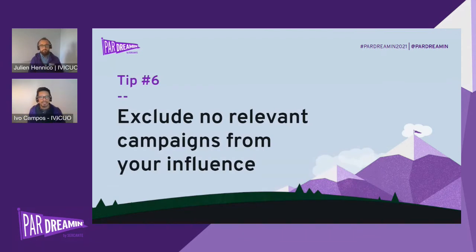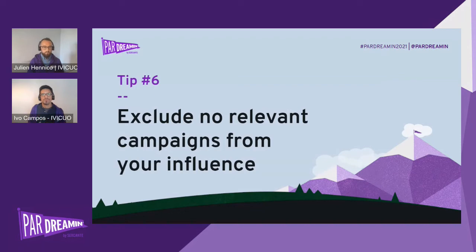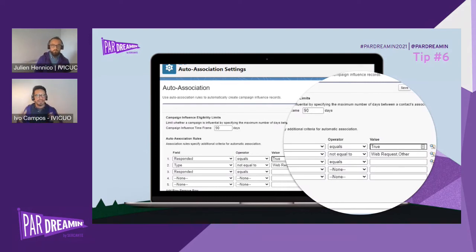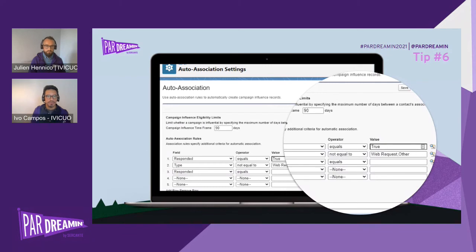Tip number six: exclude non-relevant campaigns from your campaign influence. This is super important because, as Julian explained earlier, there is sometimes a misconception about which types of campaigns to compare. Use the auto association rules in Salesforce when defining your campaign influence to exclude campaigns that are not relevant. For example, if your team decides to compare only channels, then exclude all conversion-type campaigns — because comparing organic versus demo requests doesn't make any sense.